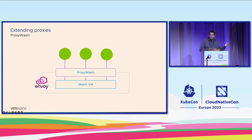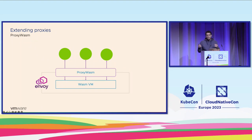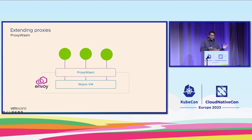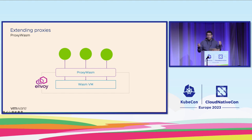It also includes SDKs for different languages. If you want to write a filter on the guest side, you implement your program using this SDK. Right now there are SDKs for Rust and C++, and also one for Go provided by the Tetrate Labs team. On the host side, there is a reference implementation in C++, which is the part that Envoy uses to start the WebAssembly virtual machine and run the WebAssembly inside of it.